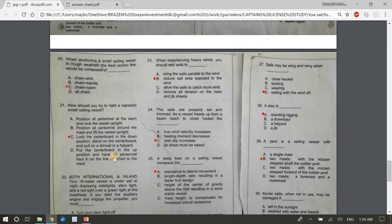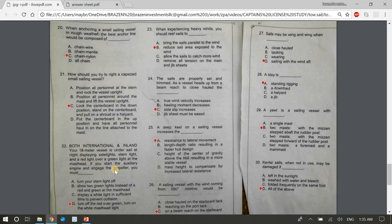Number 21, how should you try to write a capsized small sailing vessel? The answer is C, lock the center board in the down position and stand on the center board and pull on a shroud or halyard. 22, both international and inland, your 18 meter vessel is under sail at night displaying side lights, stern light and a red light over a green light at the masthead. If you start the auxiliary engine and engage the propeller, you must blank. The answer is D, turn off the red over green. Turn on the white mast headlight because you become a power driven vessel at that point.